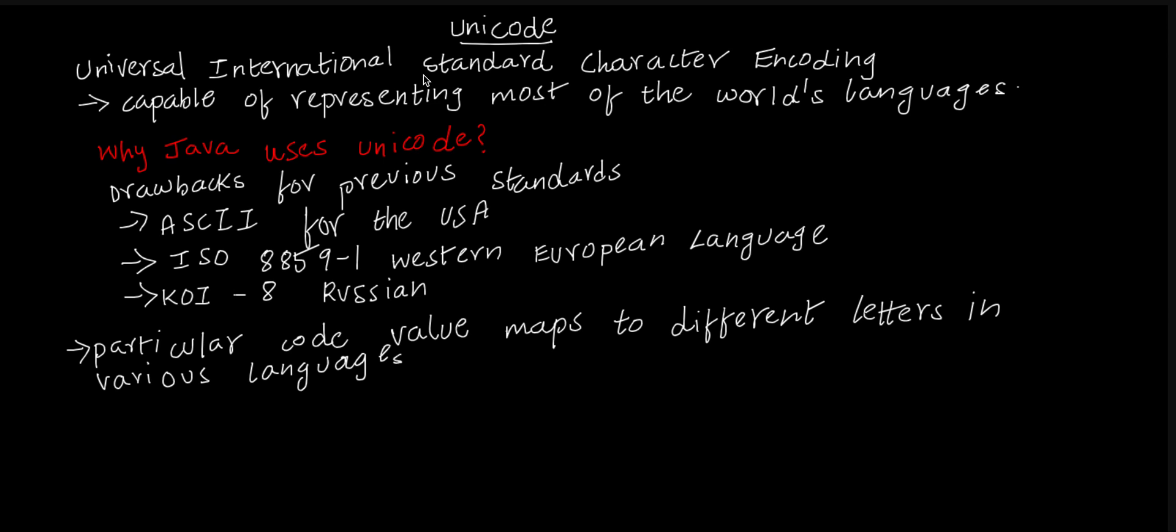We need to convert our characters to machine understandable format. Universal international standard character encoding is one of those methods by which we can convert our characters - capital A to capital Z, small a to small z - into machine understandable format.